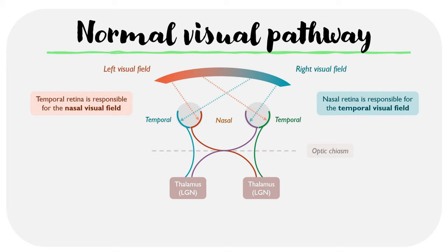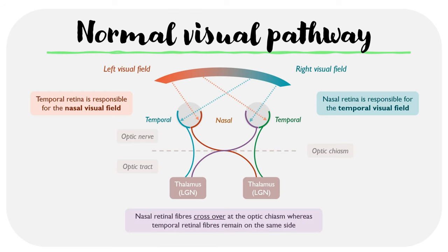Any nerves before the chiasm are referred to as the optic nerve, and any fibers after the chiasm are referred to as the optic tract. The main takeaway is that the nasal retinal fibers cross over at the optic chiasm, whereas temporal retinal fibers stay on the same side.